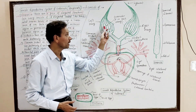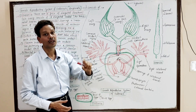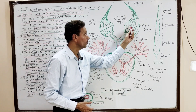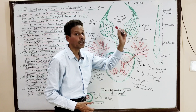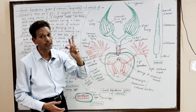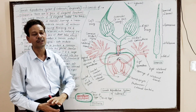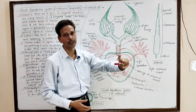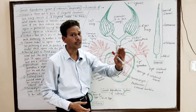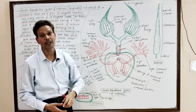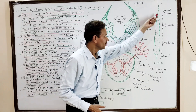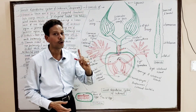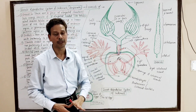In each ovary, there are 8 elongated, beaded-like structures. These are ovarioles. So in each ovary, there are 8 elongated, beaded tubular structures, and in each ovary these are 8 in number.